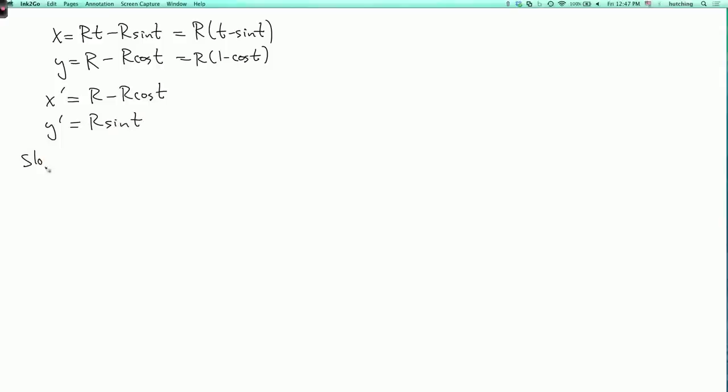So the slope is y prime over x prime, which is r sine t over r minus r cosine t, which I can simplify by canceling out the r's, as sine t over 1 minus cosine t. So that's the slope.